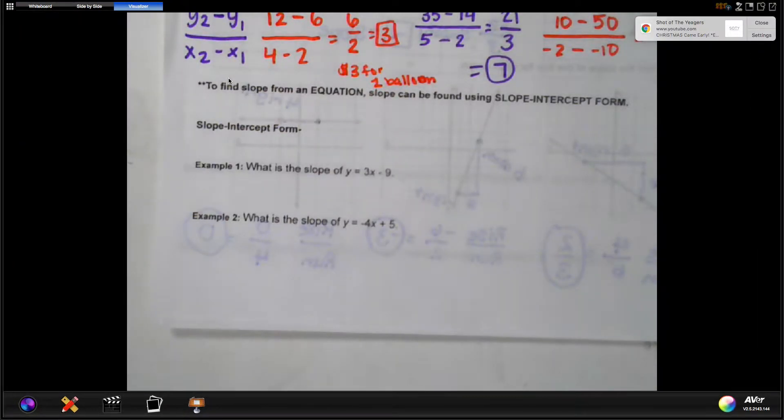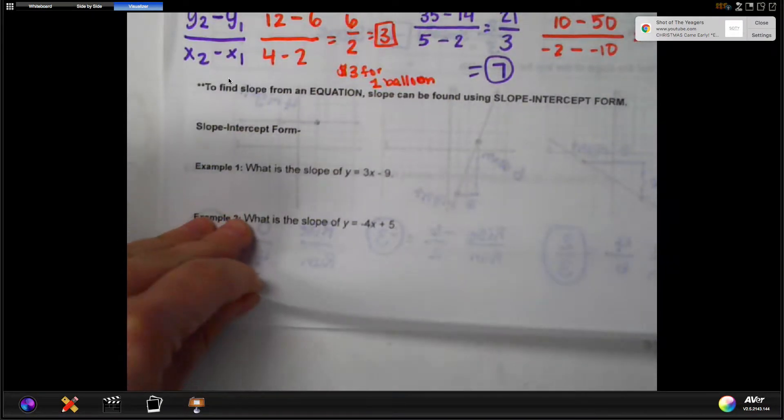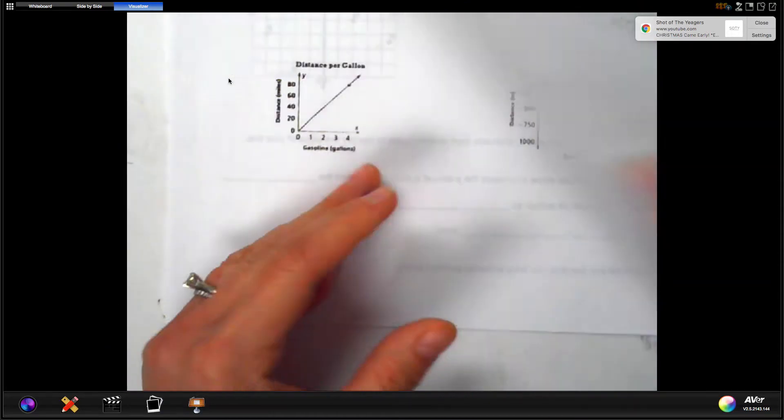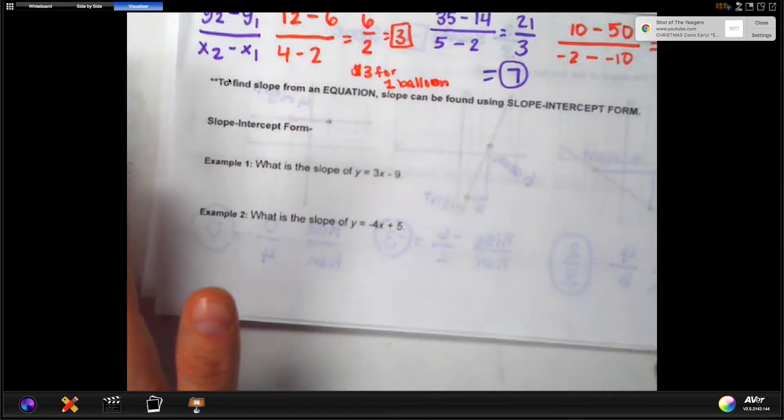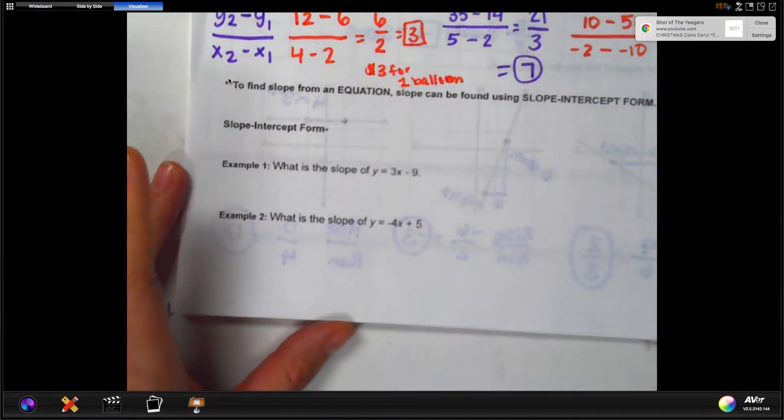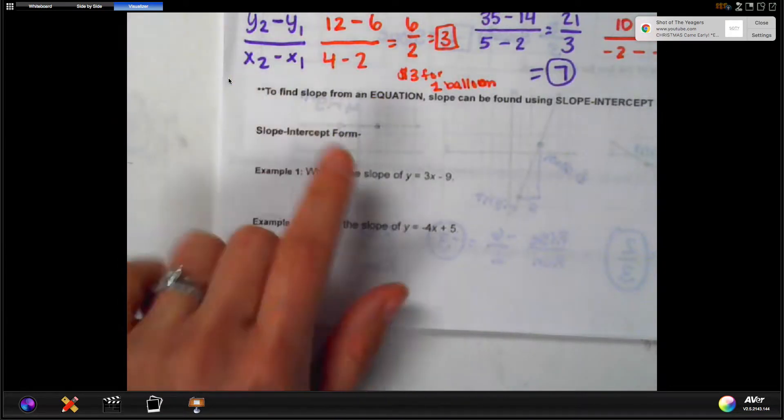Good morning, and welcome to our slope from an equation lesson. If you have class with me today, we're in the packet that I gave you, the note packet. We're on the back of the first page, and we're going to start at the bottom where it says, 'To find slope from an equation, slope can be found using slope-intercept form.'